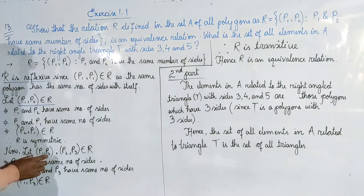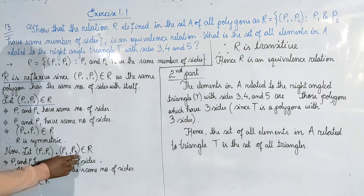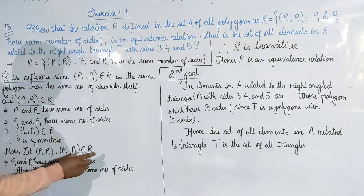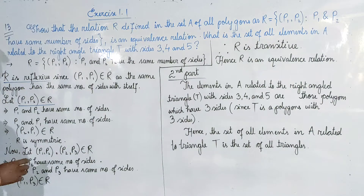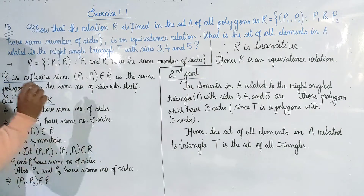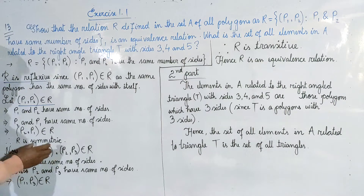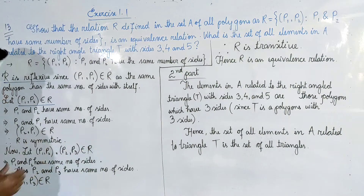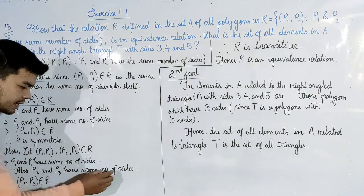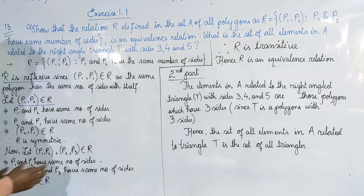P1 and P2 have the same number of sides. P2 and P3 have the same number of sides. Therefore, P1 and P3 also have the same number of sides.